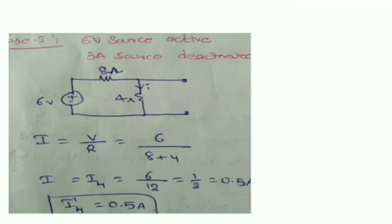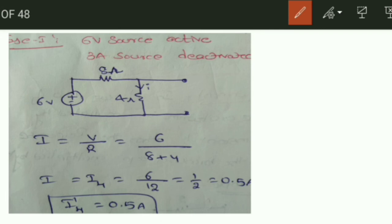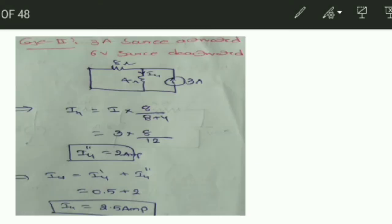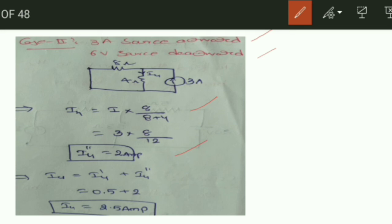For the next problem: Case 1 — 6V source activated, 3A source open-circuited. I = V / total resistance = 0.5A, so I4' = 0.5A. Case 2 — 3A source activated, 6V source short-circuited. Using current division: I4'' = 3A × 8Ω / (8 + 4) = 2A. Algebraic sum: 0.5 + 2 = 2.5 amperes.